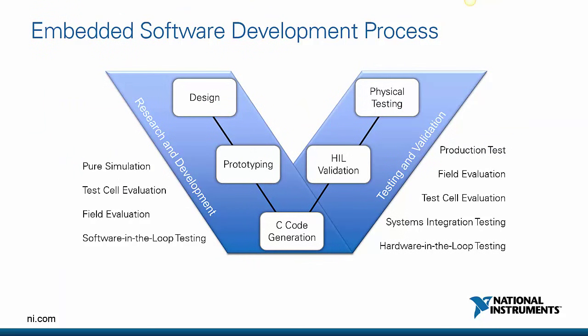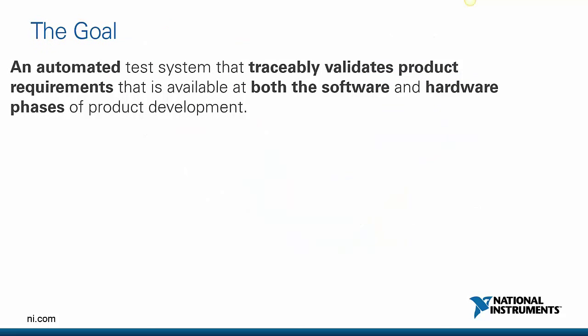The embedded software development process consists of a few different phases ranging from initial design, where we're designing the initial control systems and pairing that with a simulation model of a physical system, all the way through when we're building prototypes, generating some code, and then performing HIL validation and physical testing. Along the way we're doing a variety of tests to make sure that we get out the bugs in our software as quickly and as early in the development process as possible.